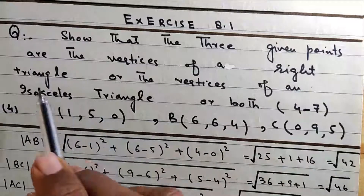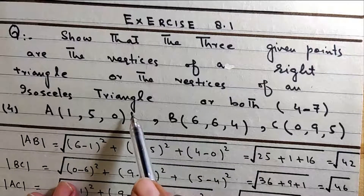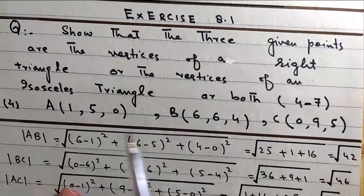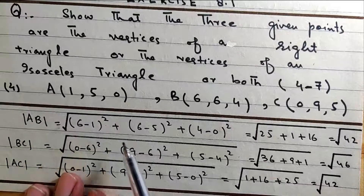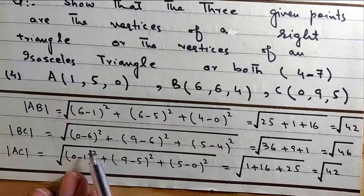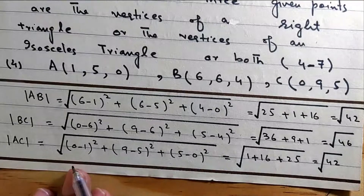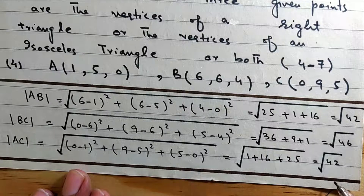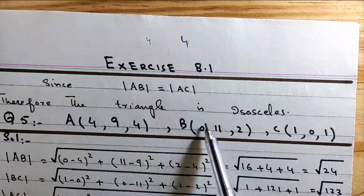Show that the three given points are the vertices of a right triangle or an isosceles triangle, or both. We calculate AB first: x1, y1, z1 components. We get under root 42. Since AB equals AC, therefore the triangle is isosceles.